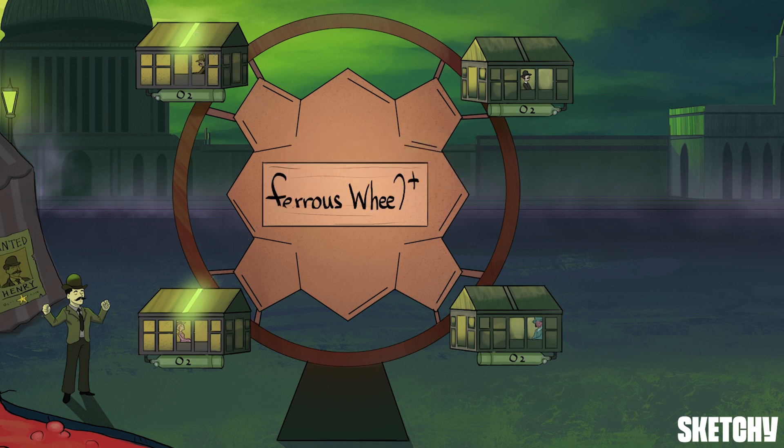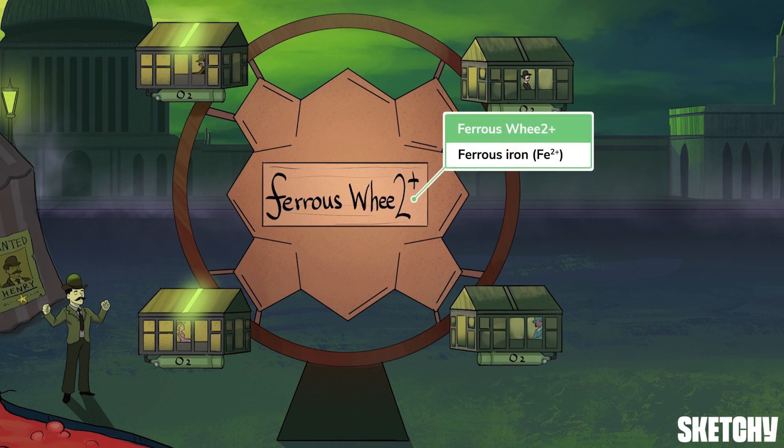One final thing about hemoglobin structure: the iron in each of the four heme groups must be in the reduced, or ferrous, state for normal oxyhemoglobin binding. This fact provided the perfect play on words for our sketch, as noted in this ride's sign. The 2+ in the word 'wheel' should help you remember that Fe2+ is the way to go if you want to effectively transport oxygen.